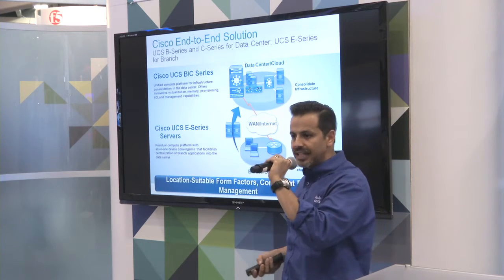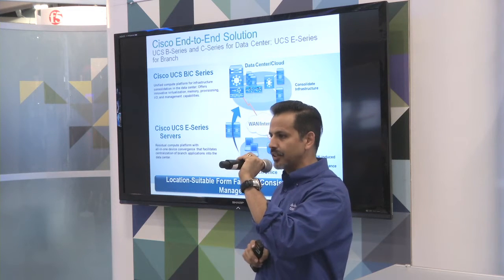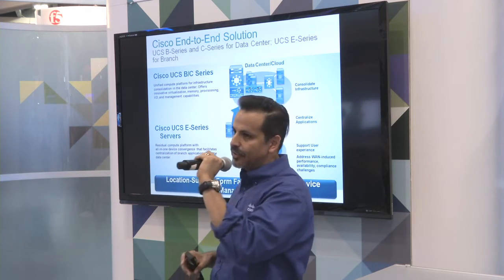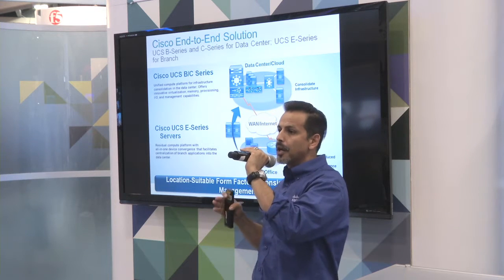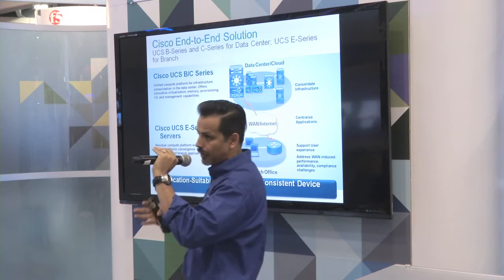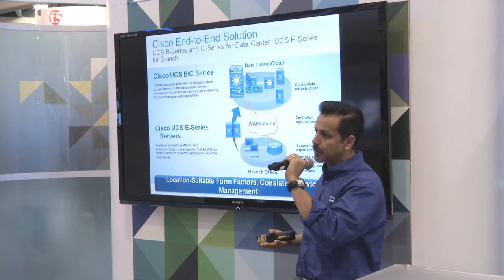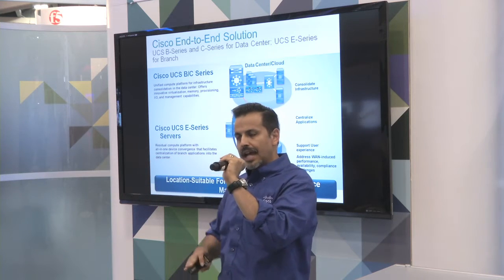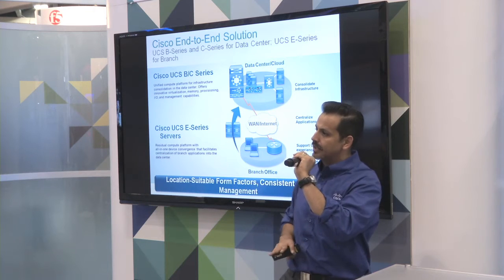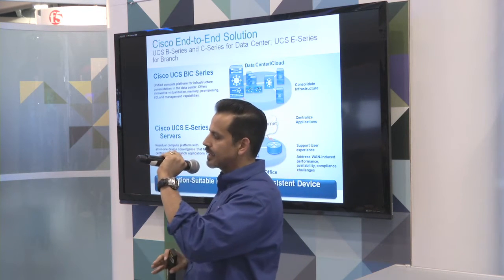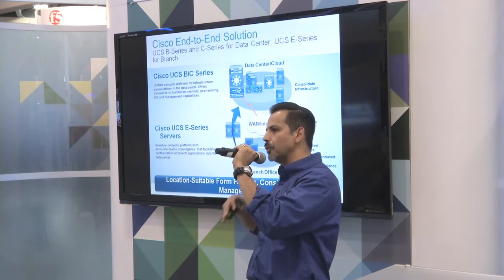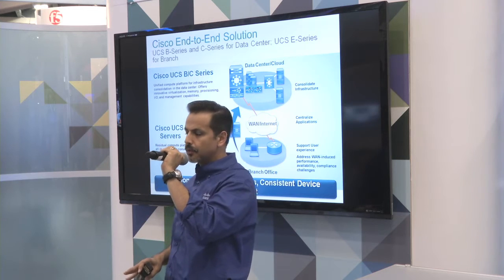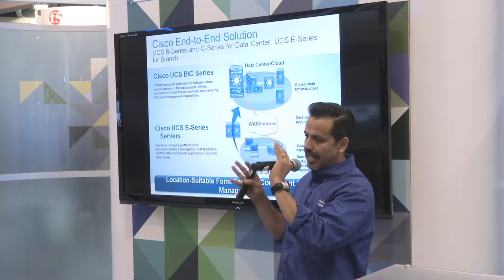I'm going to talk about the Cisco UCS E-Series server. The UCS E-Series is the server blade that goes into our branch routers — the Cisco ISR routers, the 2900s, the 3900s, and our new 4451. The E-Series inserts right into one of the service module slots in that router. It's much more powerful than the legacy SRE blades, and you can really start thinking about virtualizing multiple applications, hosting them on the E-Series, and reducing the infrastructure at your branch offices.